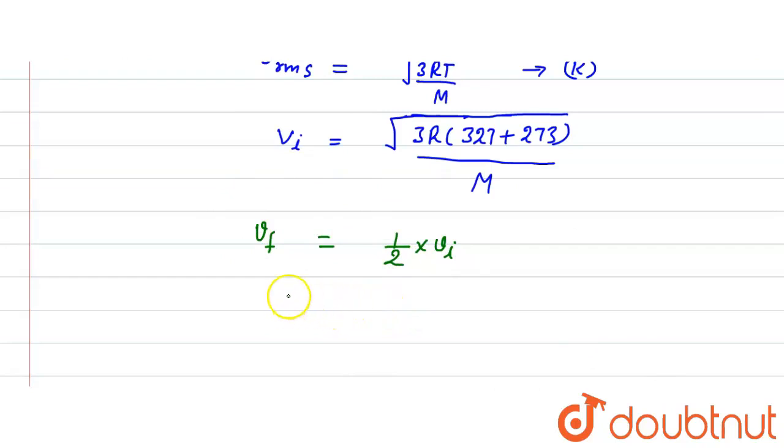So now here put the value. So this is 3R and temperature, take T_final upon M. And here this value, half into initial value put here, this is 3R, this is 600 upon M.